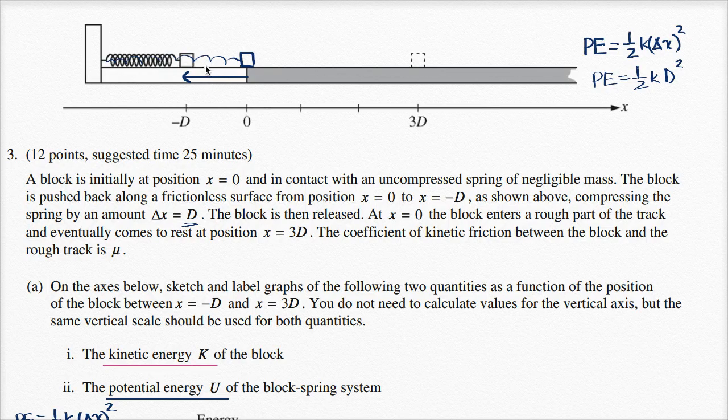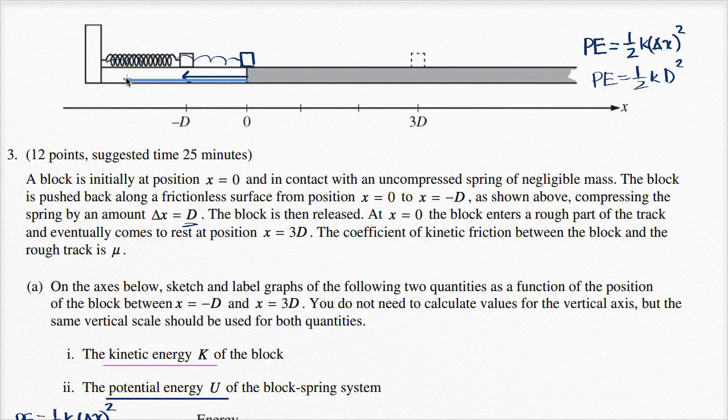Now this new scenario, we could call that scenario two. We are going to compress the spring twice as far, so now we're going to compress it by 2D. So this is x equals negative 2D here. And what's being proposed by the student is, all right, if we compress it twice as far...